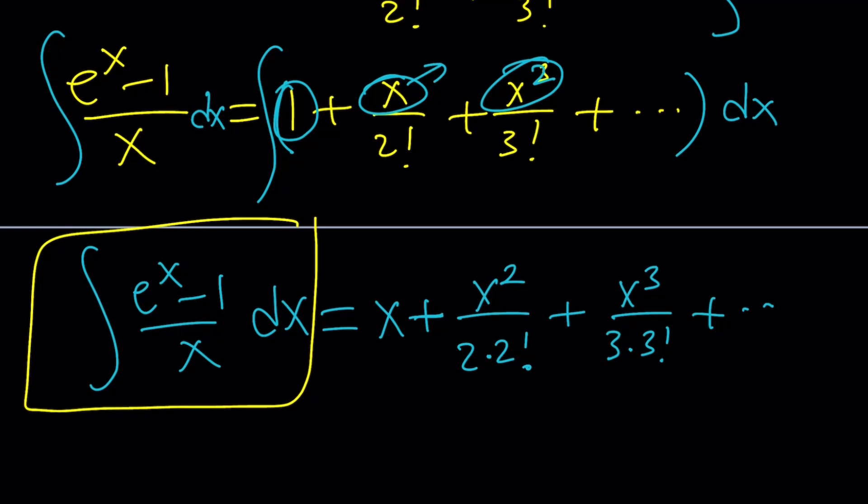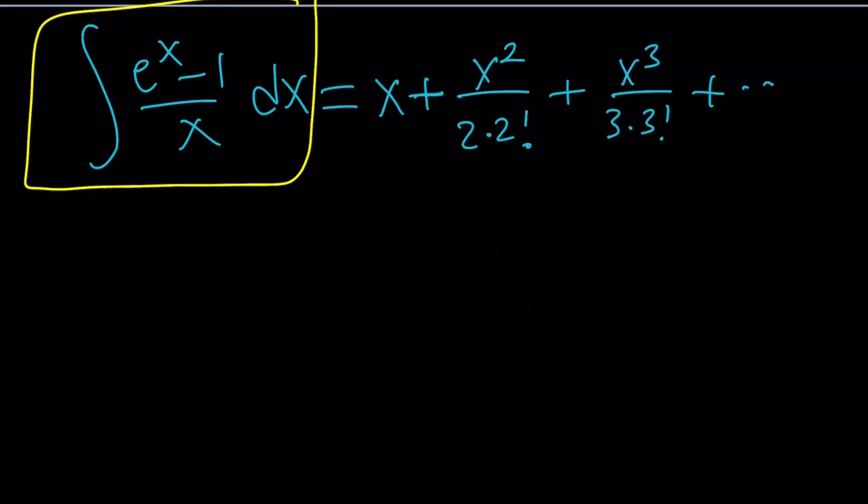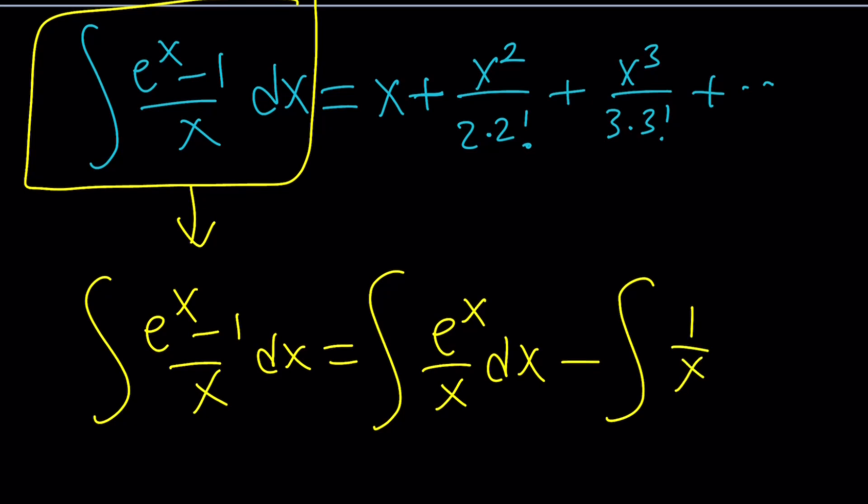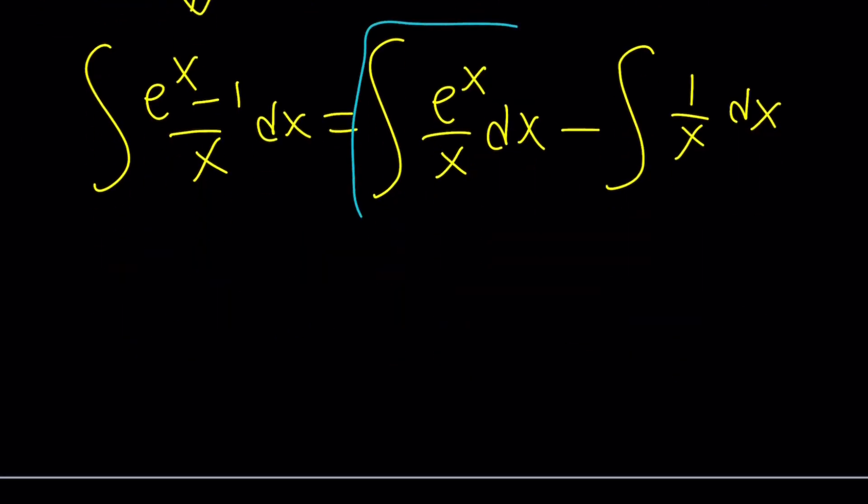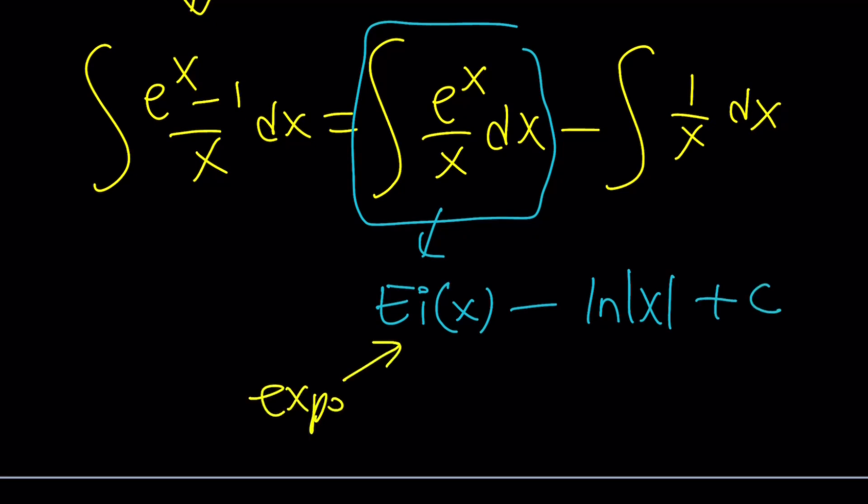But the million-dollar question is, what is that thing, right? Let's go ahead and split it up. So, we can write this as this minus this, and guess what this is equal to? This is a new thing that I'm introducing. Probably some of you knew about it. This is called ei of x, and this is obviously ln absolute of x, and don't forget your constant. And guess what this is called? This is called the exponential integral.